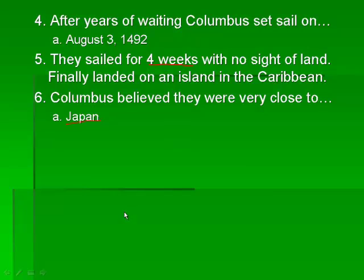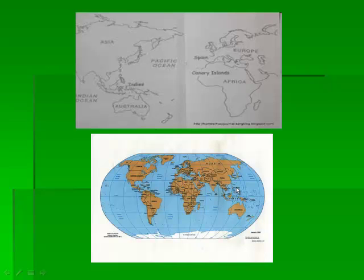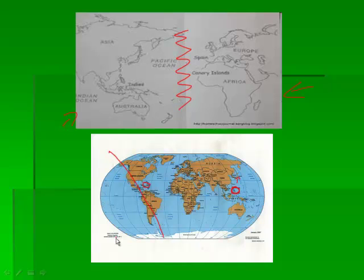Looking at the map, this is where Columbus thinks he is, and this is where Japan actually is — he is almost a whole entire world apart from where he thinks he is. Columbus thinks the world is this big — what's missing is the whole North American part, South America, and some of the Pacific Ocean. He is basically saying that part of the world doesn't exist. But he is wrong, and he thinks he's in the Philippines and the Indies, but he is nowhere near Japan.